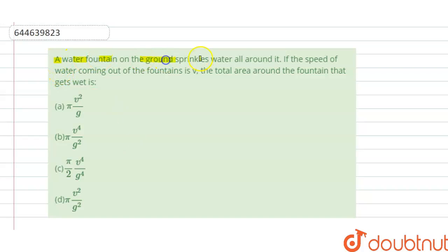A water fountain on the ground sprinkles water all around it. If the speed of the water coming out of the fountain is v, the total area around the fountain that gets wet is - options a, b, c, d are given here.